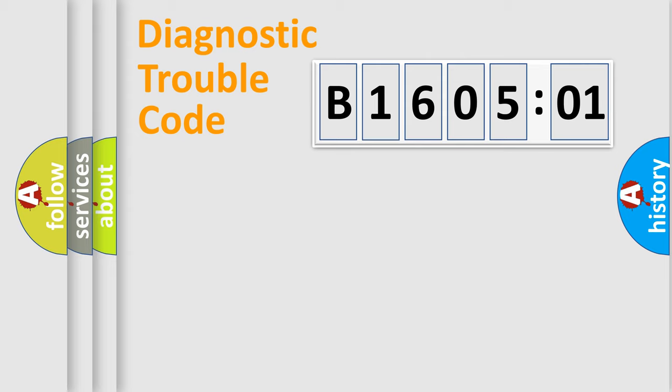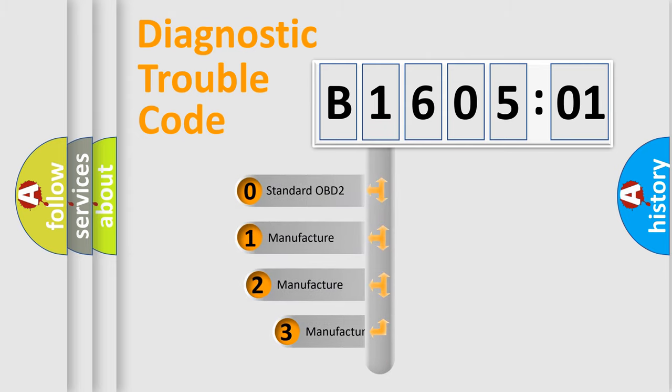Powertrain, Body, Chassis, Network. This distribution is defined in the first character code.